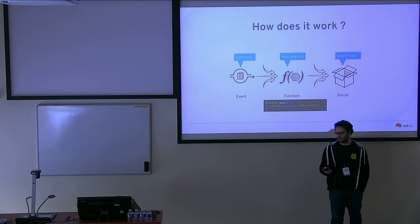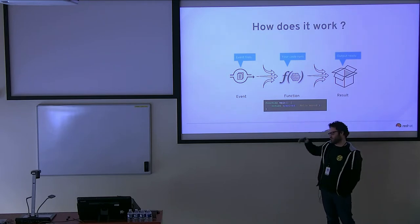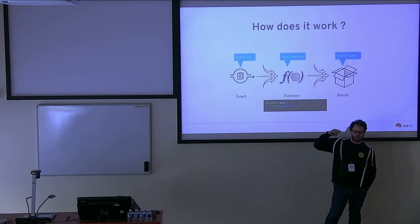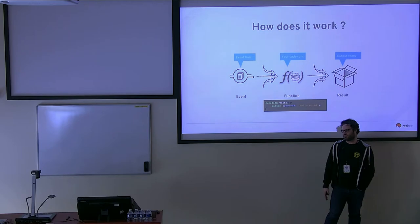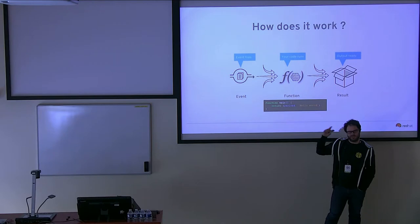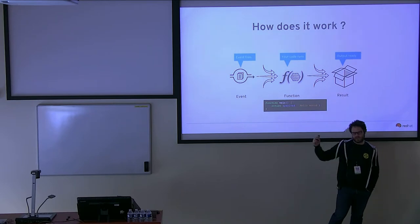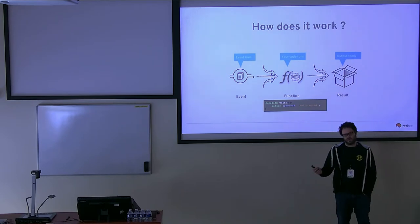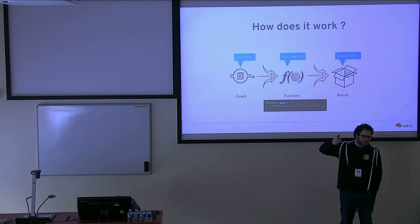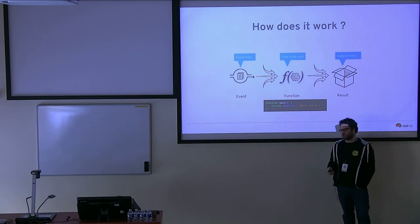How does it work? It's very simple. You have an event, you have a function, and you have a result — so input and output. The idea is that the input comes from an event, so hopefully in a nascent way you may have a message coming into a queue. You will have very simple code — the function is usually very simple code in the meaning that you may not have the full libraries of your language, but it's something very simple with a very specific use case. And you will have a result, which is necessary to understand where computation is going.